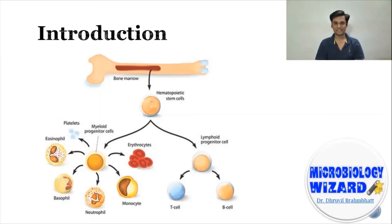Let's understand where do B cells come from. They come from bone marrow. Here is the bone which possesses bone marrow, and from there B cells originate. The process by which B cells are prepared in bone marrow is actually very interesting and unique in terms of the human body. Like many other cells in our body, B cells divide and form millions of descendants.